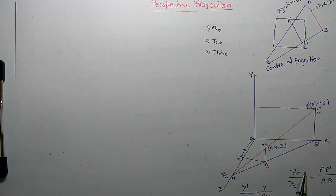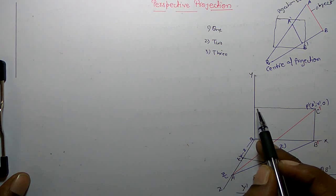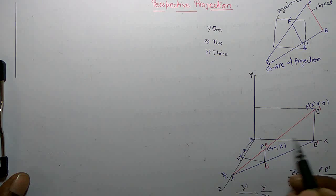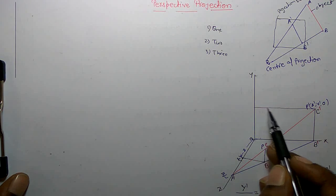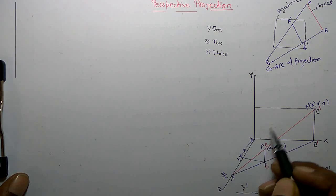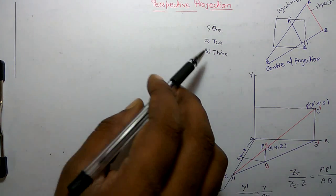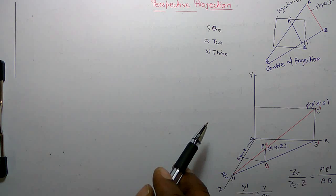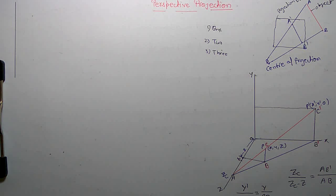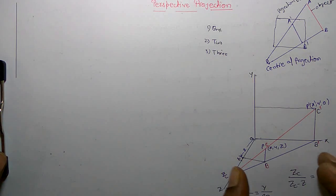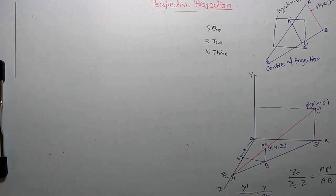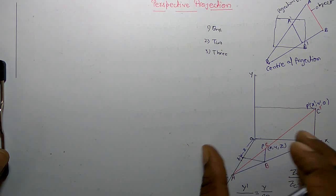If it is a two-point projection, it should intersect two principal axes. In the single-point case, the projection plane is parallel to both the x-axis and y-axis, or perpendicular to the z-axis. In two-point projection, the projection plane is parallel to one of the principal axes, or it intersects exactly two principal axes. In three-point projection, the projection plane is not parallel to any principal axis.